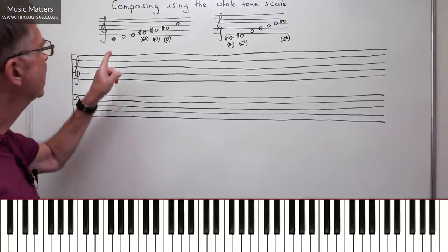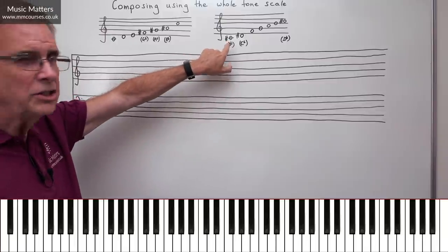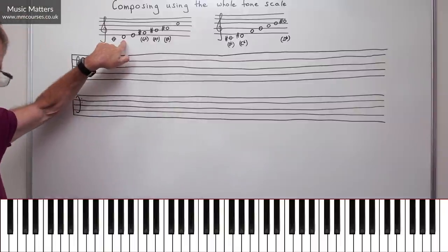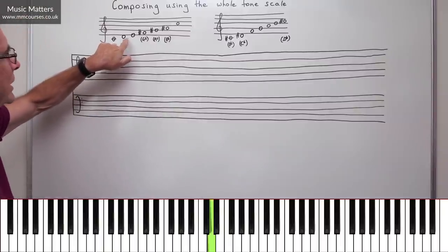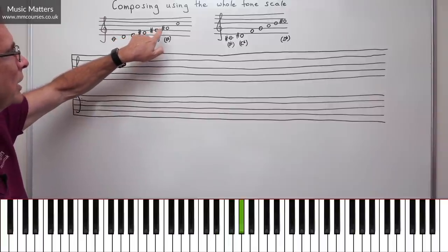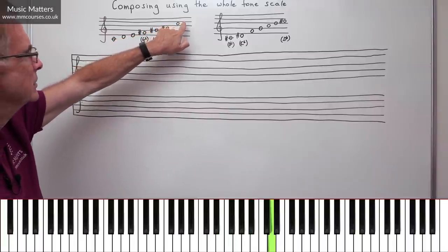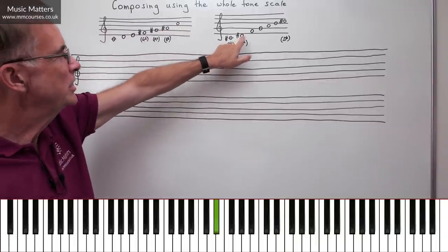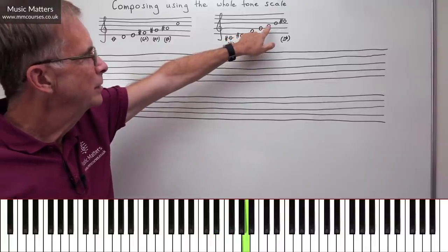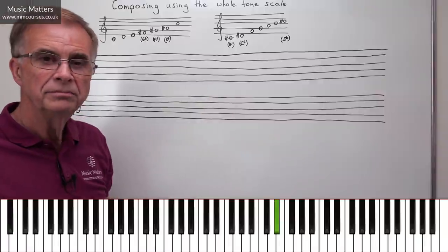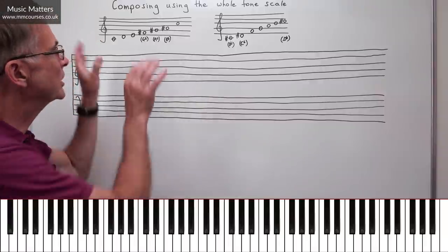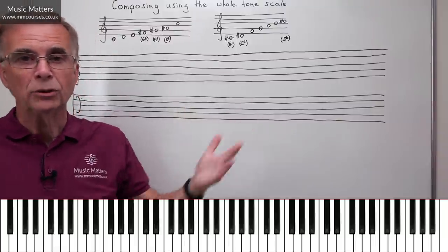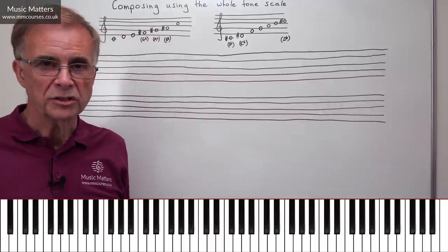But those are the only two transpositions that you can have of a whole tone scale. Now, why do I say that? Well, we started with C, we went up a semitone to C-sharp. If I go up another semitone to D, well, I end up back here, don't I? So I end up back on this scale. If I go up another semitone, D-sharp, well, I end up back here, don't I? So there's nowhere else to go. These are the only two transpositions that will work for you. But you can start anywhere you like within either of those transpositions.